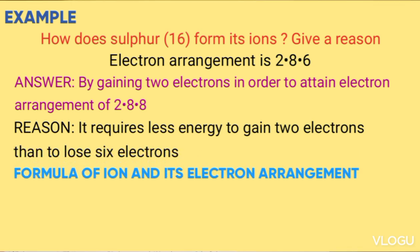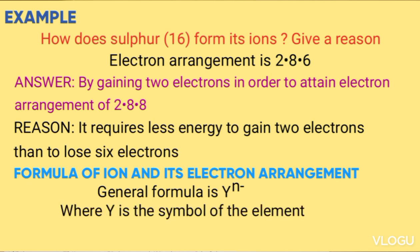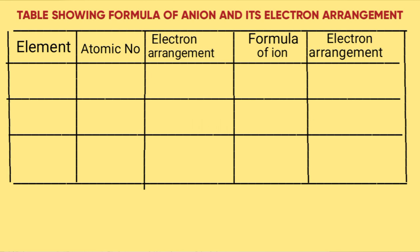Now next we look at the formula of the ion and its electron arrangement. The general formula is given by Y^n-, where Y is the symbol of the element, while n is the number of electrons gained. So the table below shows the formula of ions and the electron arrangement of some elements.